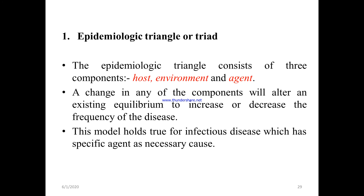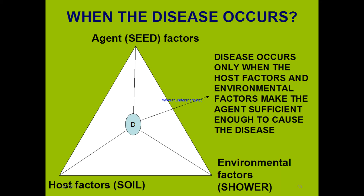The epidemiological triangle or triad model consists of three components: host, environment, and agent. A change in any of the components will alter the existing equilibrium to increase or decrease the frequency of disease. When agent factor, host factor, and environmental factor are imbalanced or disrupted among them, they cause disease.